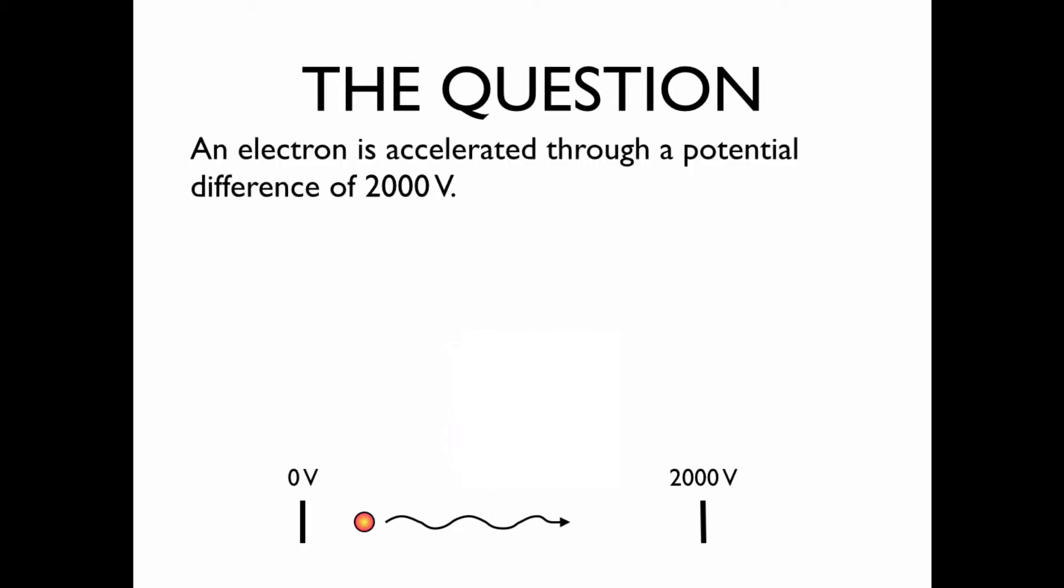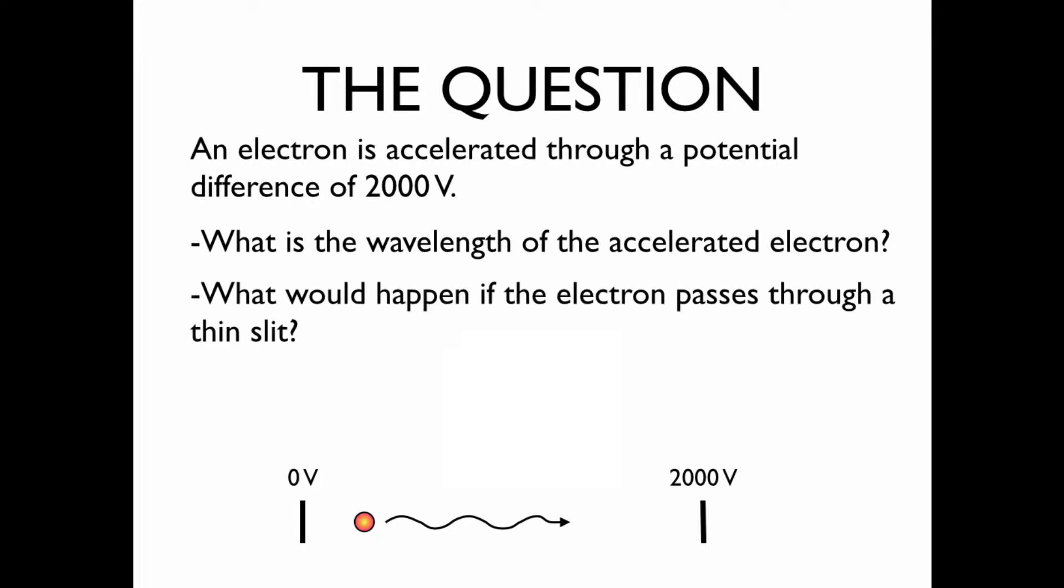An electron is accelerated through a potential difference of 2,000 volts. As indicated in the diagram, an electron with a negative charge will go from an area of lower potential to higher potential. We'd like to know what is the wavelength of the accelerated electron, and what would happen if the electron passes through a thin slit.